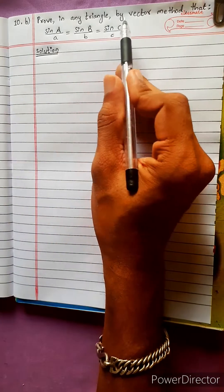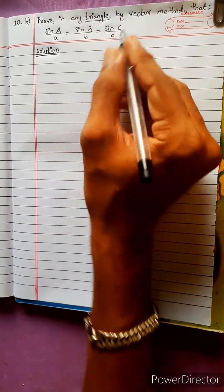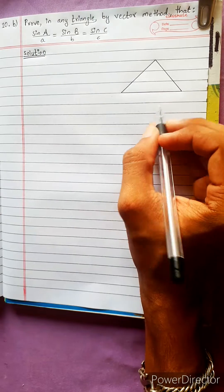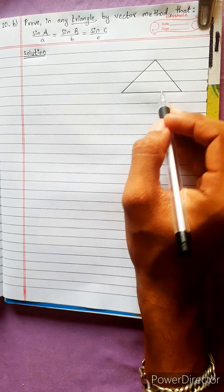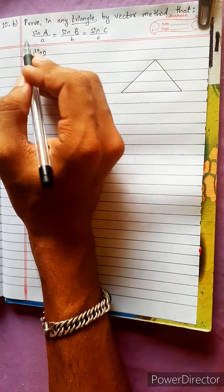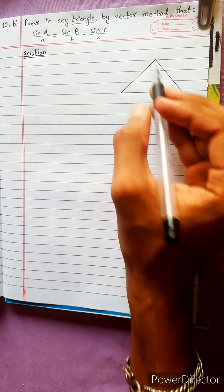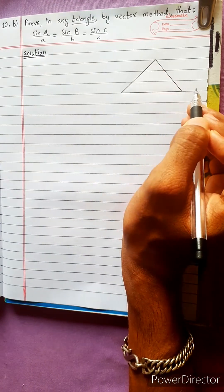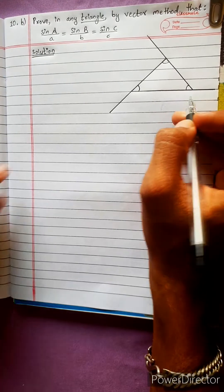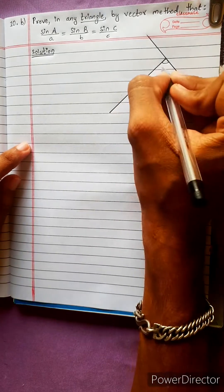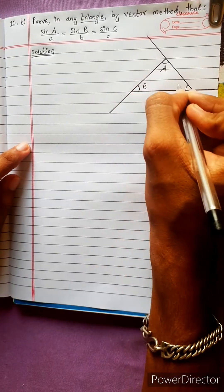Prove in any triangle by the vector method. We can make a triangle. What is the triangle? This is sine A. We can use the sine of angles and use the triangle. Suppose angle A, angle B, angle C.